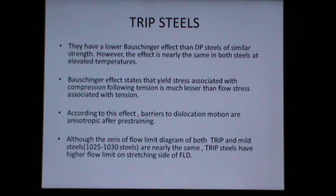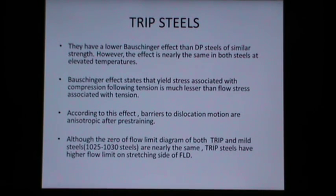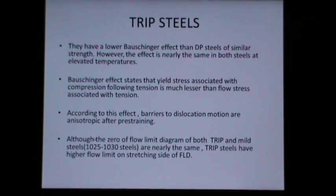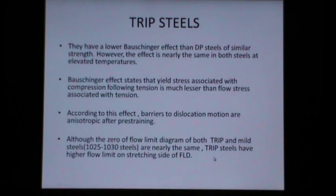According to the Bauschinger effect, barriers to dislocation motion are anisotropic after pre-straining. Although the zero of the FLD of both TRIP steels and mild steels (plain carbon steels containing about 0.25 to 0.3 weight percent carbon, also called 1025 to 1030 steels) are nearly the same, TRIP steels tend to have a higher flow limit on the stretching side of the FLD compared to mild steels of the same strength.